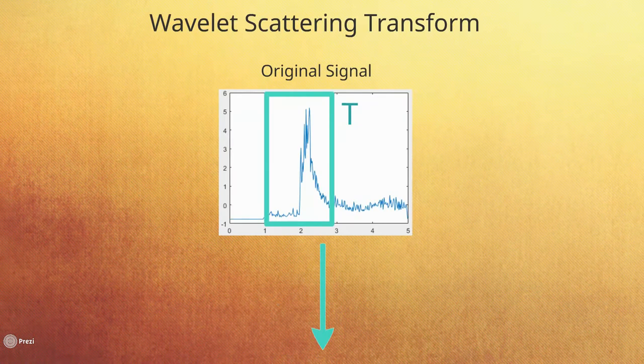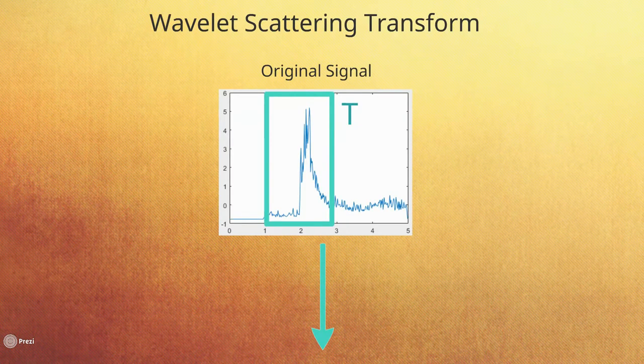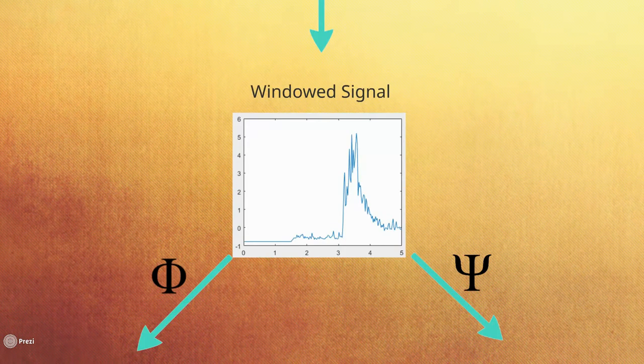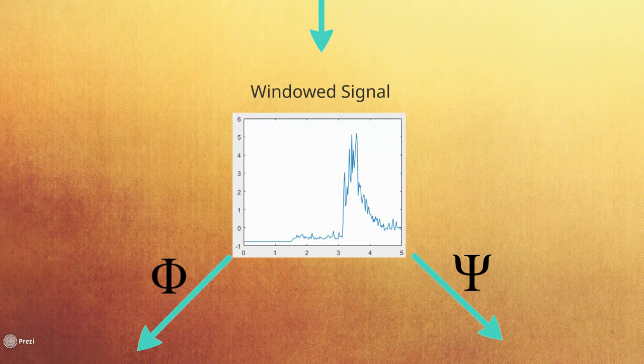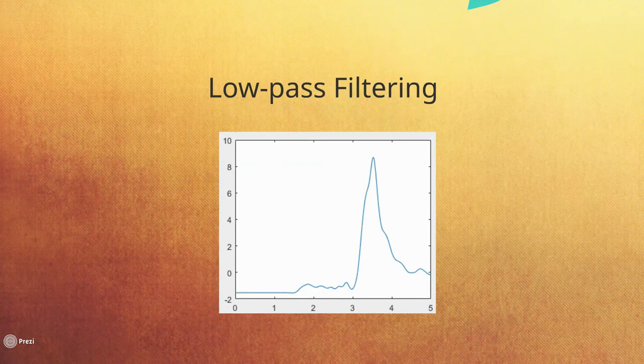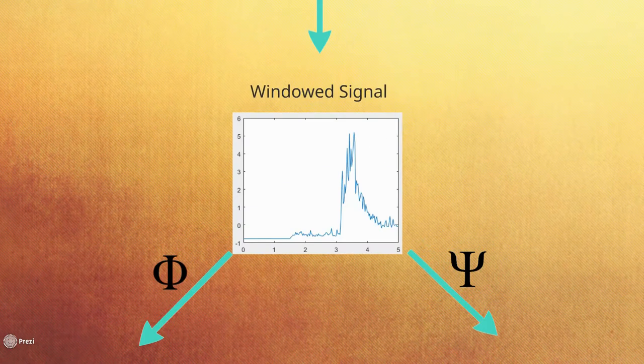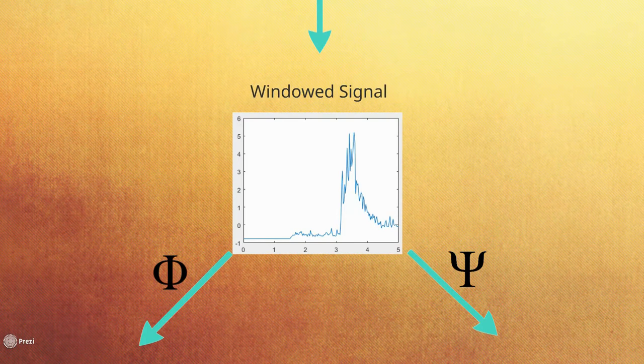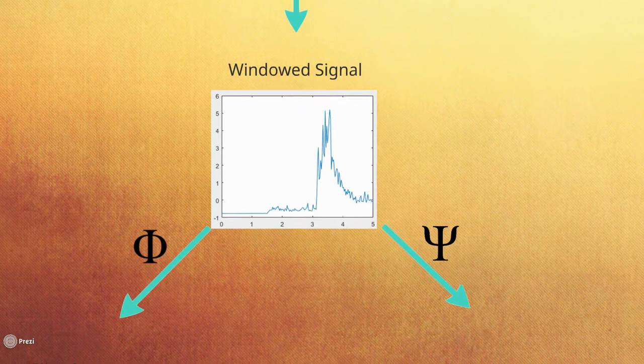We take our original signal and slice a portion of window size T to compute the scattering coefficients. First, the signal is filtered with a low-pass filter, phi, which yields an averaging of the signal and provides invariance to local time shifting. The second step is to create a new signal representation by filtering the signal again with a high-pass filter, psi, and taking the modulus.